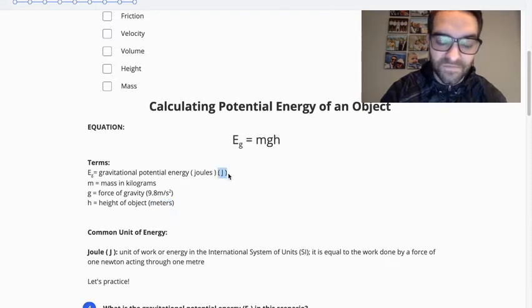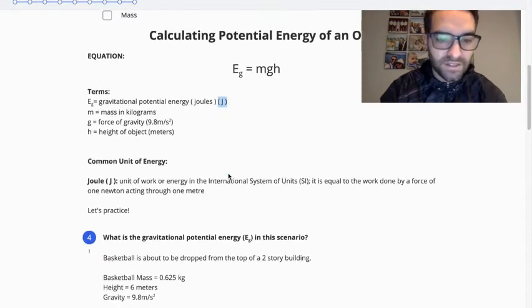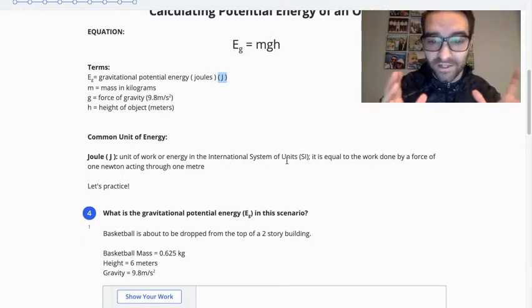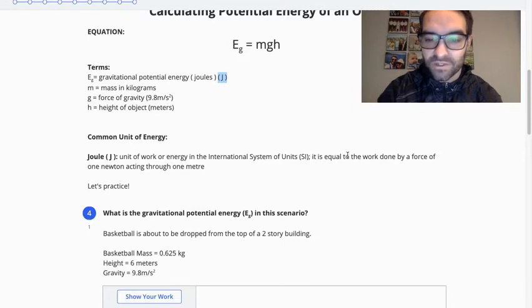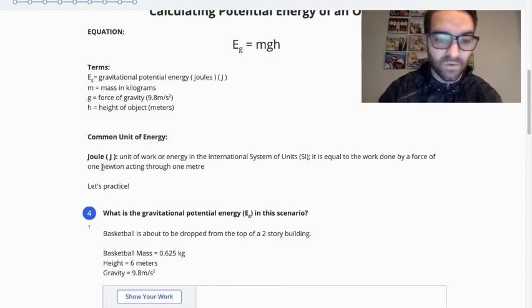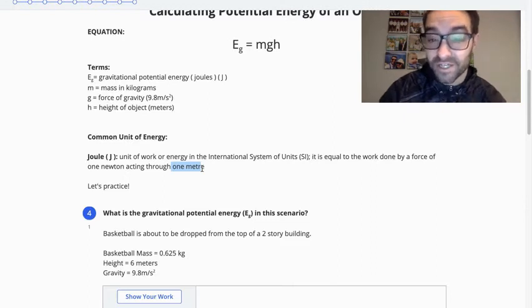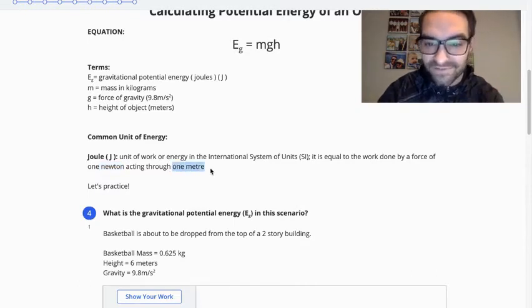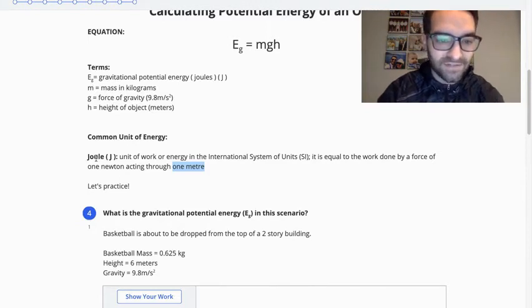And that's going to give us our answer in joules. So the common unit of energy. A joule is a unit of work or energy in the international system of units. So it's a worldwide unit. And it is equal to the work done by a force of 1 newton acting through 1 meter. And so you might recall that newtons was a measurement of force. A unit of force. So we have 1 newton through 1 meter because energy is also representing motion. So we have 1 unit of force going through 1 meter of motion. So that gives us this unit.